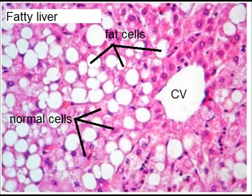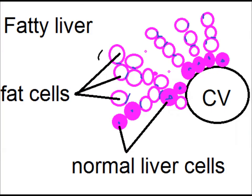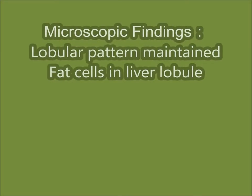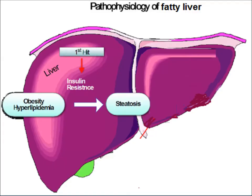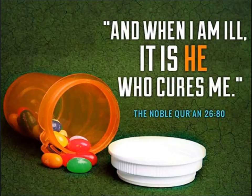In a fatty liver, fat accumulates in the cytoplasm of hepatocytes, converting them into fat cells. During processing, the fat is dissolved and the hepatocytes appear as mature fat cells. Microscopic findings include a maintained lobular pattern with fat cells present in liver lobules. Obesity or hyperlipidemia leads to steatosis and increased fatty deposition in the hepatocytes.